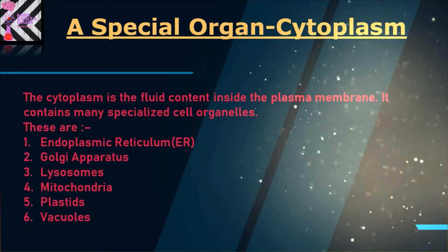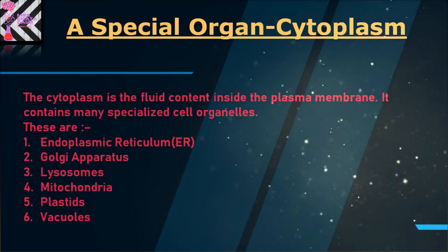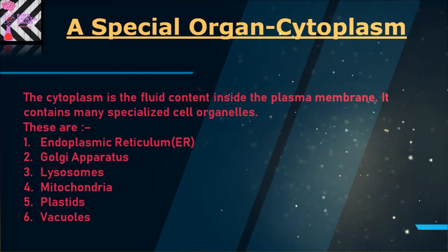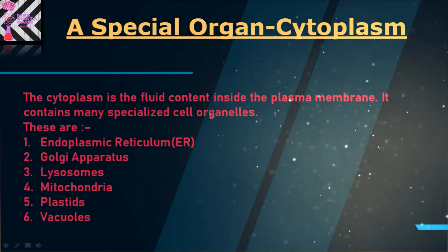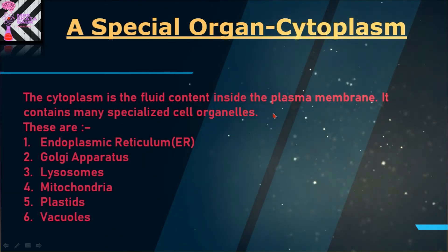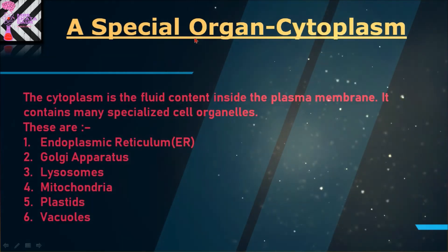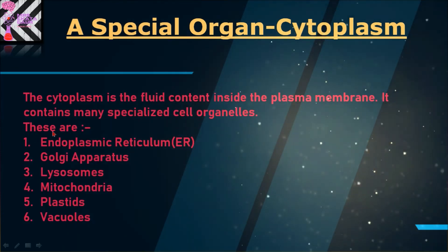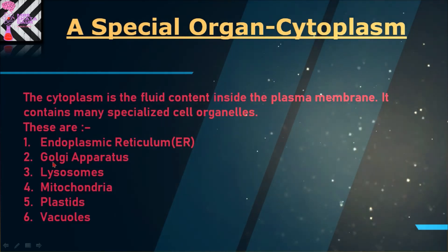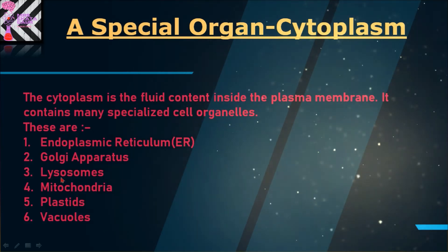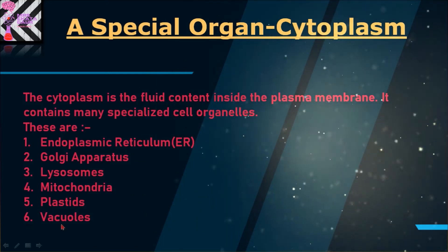So our special organ — cytoplasm. Cytoplasm is a very special organ in our cell. The cytoplasm is the fluid content inside the plasma membrane and it contains many specialised cell organelles. That is why it is considered a special organ. These cell organelles are: endoplasmic reticulum — in short, ER; second is Golgi apparatus; third is lysosomes; fourth is mitochondria; fifth is plastids; and sixth is vacuoles.